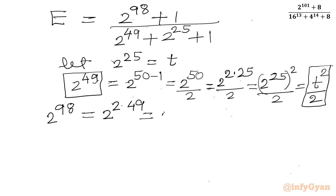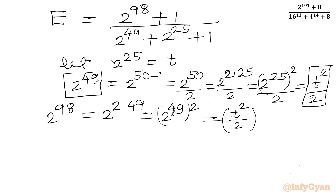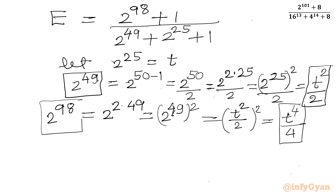Now let us find what to write for 2 power 98. We have 2 power 98 equals 2 power (2 times 49), which is 2 power 49, whole squared. Since 2 power 49 is t squared over 2, we get (t squared over 2) whole squared, which gives t power 4 over 4. We substitute these respective values.